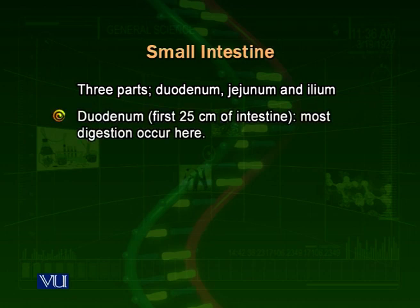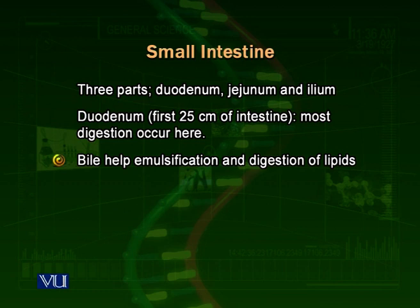Duodenum is the first part of the intestine, where food enters from the stomach. In the duodenum, different types of enzymes and secretions help in the digestion of food. The secretions of the liver, stored as bile in the gall bladder, are released into the duodenum. The pancreatic juice is also released into the duodenum. Bile helps in the digestion of lipids by causing emulsification — it attaches to the lipids and makes them available for enzyme action.